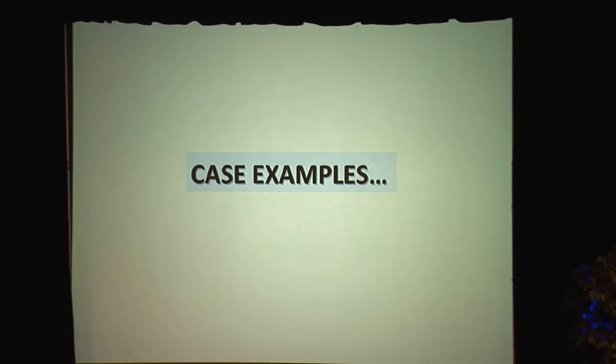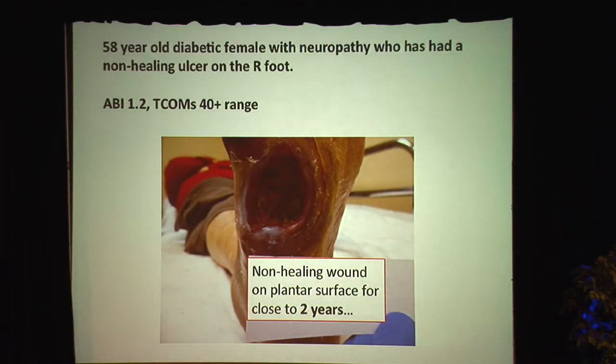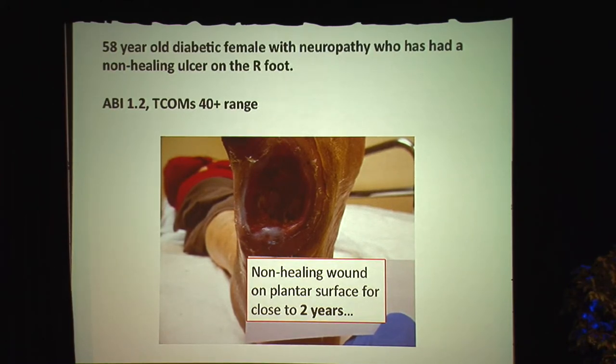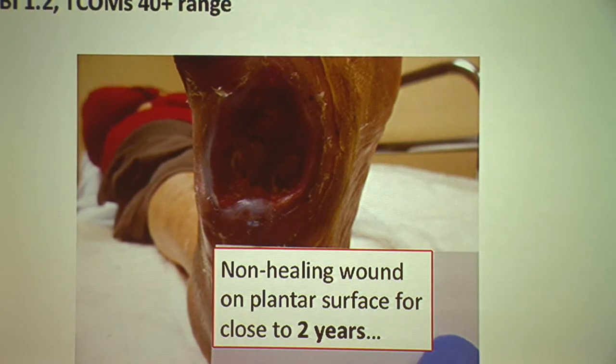I'm going to end with a case example that really summarizes where we've come in 2015 with our understanding of diabetes and below-the-knee disease. This is a 58-year-old diabetic female with severe neuropathy. Traditionally, we were taught that diabetic foot ulcers are a result simply of neuropathy — perhaps Charcot's anomaly — and it's a different process than an arterial ischemic ulcer. But the term I want you to understand now is neuroischemic: ulcers that we think are neuropathic actually have an underlying arterial component about 40% to 50% of the time.